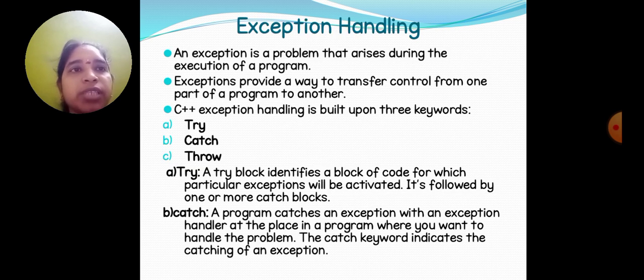Exception handling. An exception is a problem that arises during the execution of the program. Exception provides a way to transfer control from one part of the program to another. C++ exception handling is built upon three keywords: try, catch, throw. Try block identifies a block of code for which particular exceptions will be activated. It is followed by one or more catch blocks.